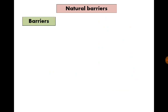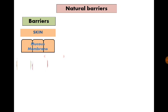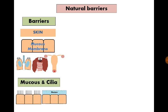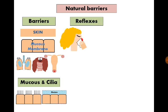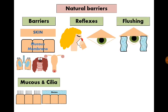Natural barriers are classified into barriers that prevent access of different organisms to our body, like the skin or the mucous membranes lining the respiratory, gastrointestinal, and urogenital systems. Mucus and cilia lining these mucous membranes help trap organisms and expel them. Different reflex mechanisms like sneezing, coughing, and blinking also help to expel foreign bodies.